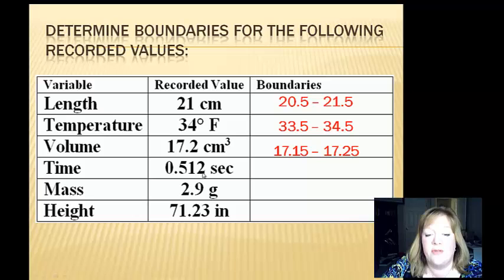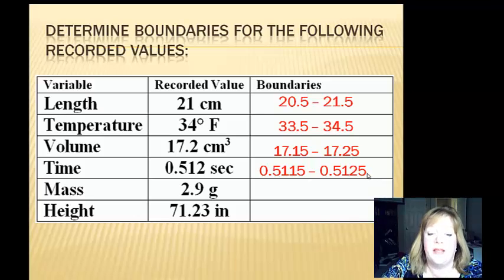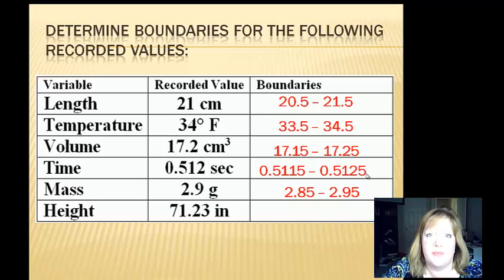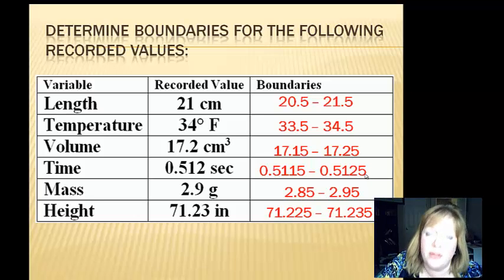For 0.512, we add another decimal place: 0.5115 to 0.5125 — down a half a step, up a half a step. See if you can do the next one. The answer is 2.85 to 2.95. And the last one, 71.23 — the answer is 71.225 to 71.235. They're very easy and intuitive. Bring any questions tomorrow.